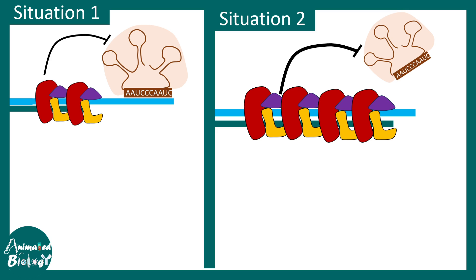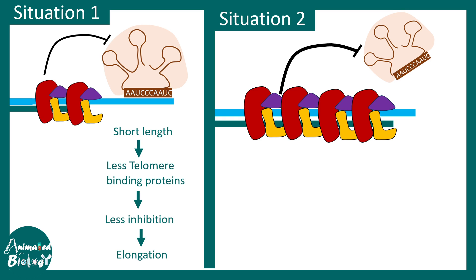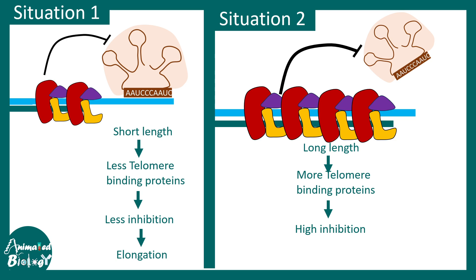Imagine two scenarios. In one scenario the telomere length is quite short; in the other scenario the telomere length is quite long. These proteins bind to the double-stranded DNA. When the telomere length is too long, there are too many protein complexes that bind there, and so many telomere binding proteins strongly inhibit telomerase, blocking its activity. When the length is short, fewer telomere binding proteins bind and inhibition is less, so elongation of the telomere occurs. But when the telomere is long, more binding proteins bind, giving very strong inhibition so elongation is prevented. This is how fine-tuning of telomere length is maintained in eukaryotes.